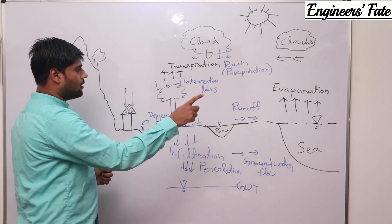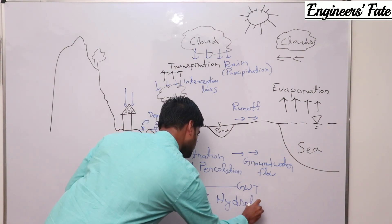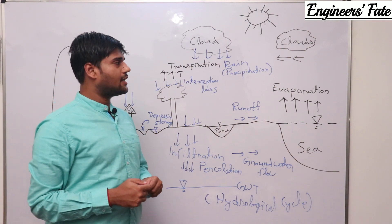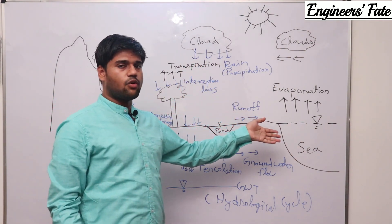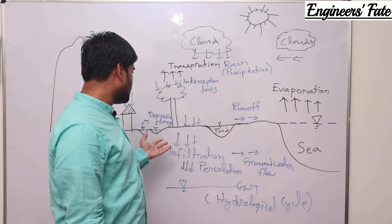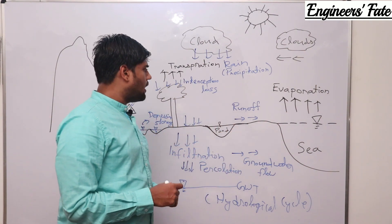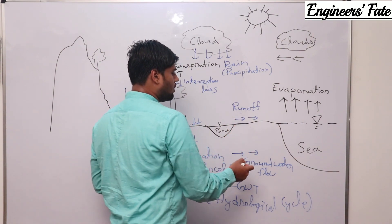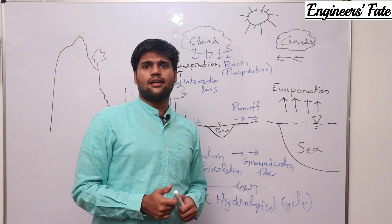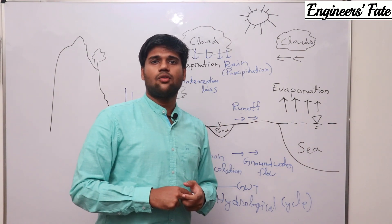This is the complete process, and that complete process is known as the hydrological cycle. To summarize: first, due to sun's radiation, water vapor moves up — that process is evaporation. Due to evaporation, clouds are formed. Then precipitation occurs, rainfall occurs. Some amount of water goes into the ground and some amount flows over the ground — that is runoff. At last, runoff water and groundwater flow meet any stream, and again the same process starts. The hydrological cycle is a continuous process.